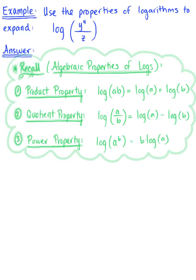So our first property is the product property of logarithms, which tells us that if we have the log of, say, a times b, this is equal to log of a plus log of b.